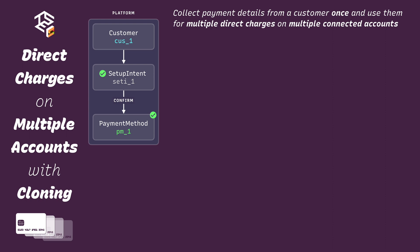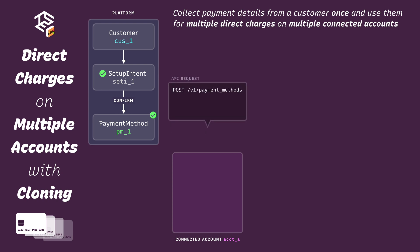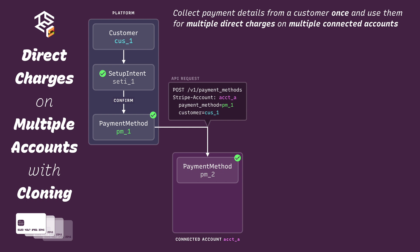Now that we have a payment method set up for future use on the platform, we can clone it to a connected account. Let's start with connected account A, where we want to make our first direct charge. To clone the payment method to this account, we need to make a POST request to V1 payment methods. We set the value of the Stripe account header to the connected account's ID, and in the body of the request, we'll specify the ID of the payment method we want to clone, and because that payment method is attached to a customer, we also need to specify the customer ID. When this API request succeeds, a new payment method object on the connected account is created.